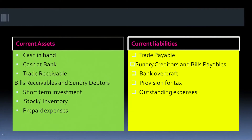Current assets include cash in hand, cash in bank — these are the most significant — along with bills receivables, trade receivables, sundry debtors, short-term investments, stock or inventory, prepaid expenses, advance tax, and so on. Current liabilities are your bills payables or trade payables, sundry creditors, your bank overdraft, provision for tax, and outstanding expenses.